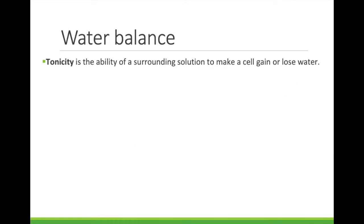Tonicity is the ability of a surrounding fluid to affect change on a cell. There are three possibilities for tonicity: isotonic, hypotonic, and hypertonic. Let's look at these one by one.